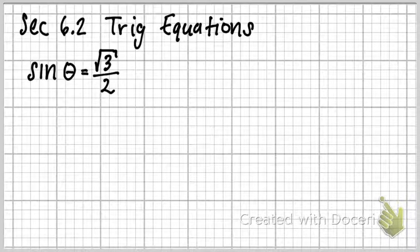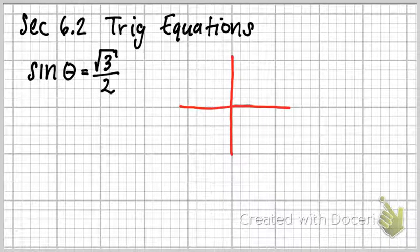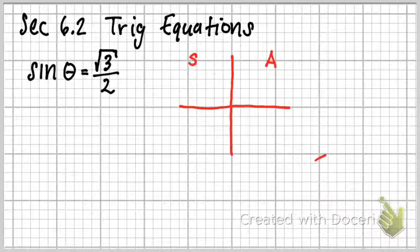Section 6.2: Trigger Equations. The first thing we're going to look at is the sine of theta equals square root of 3 over 2. Now this is something we've seen before. The first thing to notice is the square root of 3 over 2 is positive. So if we think about the unit circle, what we'll realize is that if sine is positive, we're either in the first or second quadrant.